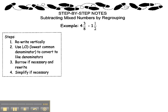When you are adding or subtracting mixed numbers, you first need a common denominator. Rewrite your problem, 4 and 3 eighths minus 1 and 1 half.